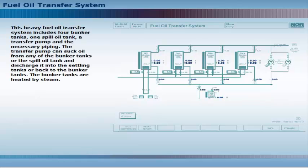This heavy fuel oil transfer system includes four bunker tanks, one spill oil tank, a transfer pump, and the necessary piping. The transfer pump can suck oil from any of the bunker tanks or the spill oil tank, and discharge it into the settling tanks or back to the bunker tanks.